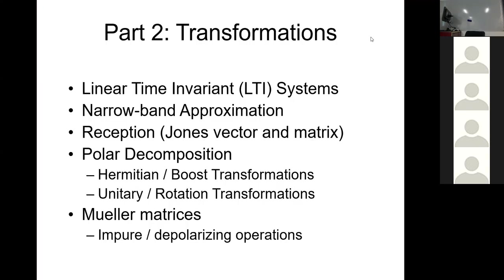Before jumping in, I'm going to talk a little bit about linear time-invariant systems, relating all of this to signal processing theory. I want to introduce the narrow-band approximation that allows us to stop thinking about convolution and just treat everything as multiplication. Then we'll introduce Jones vectors, and if you have two receptors, you have a Jones matrix, which we can treat as any arbitrary transformation of the electric field vector.